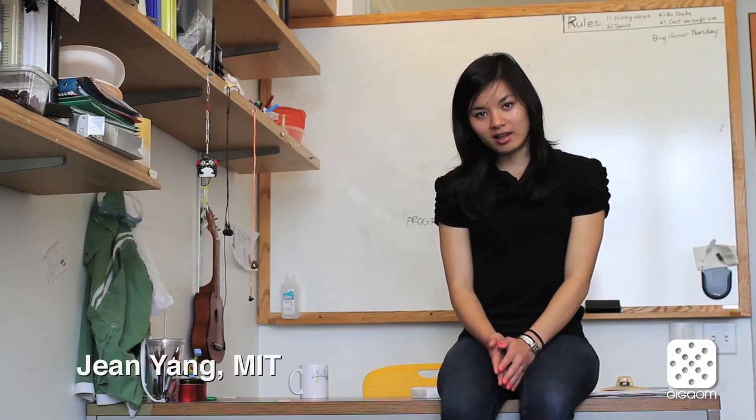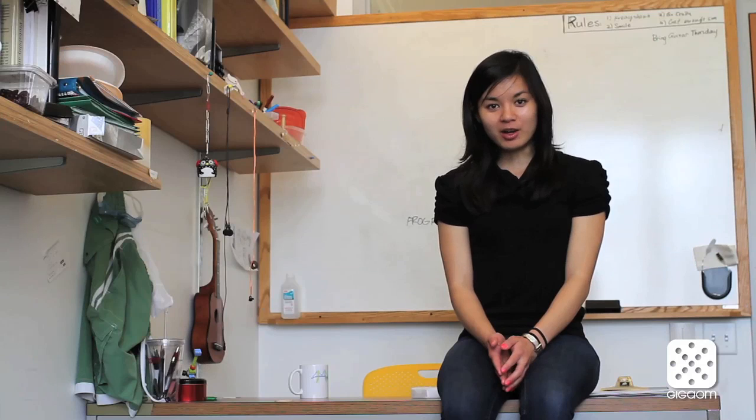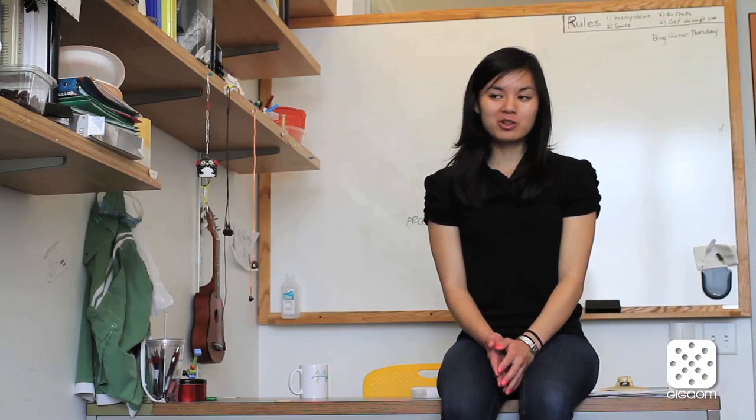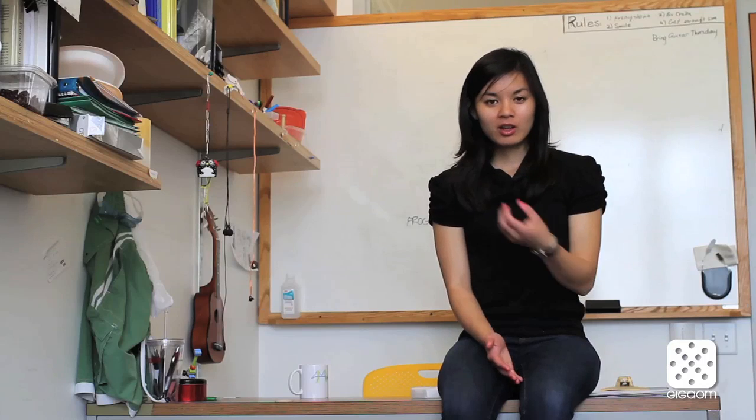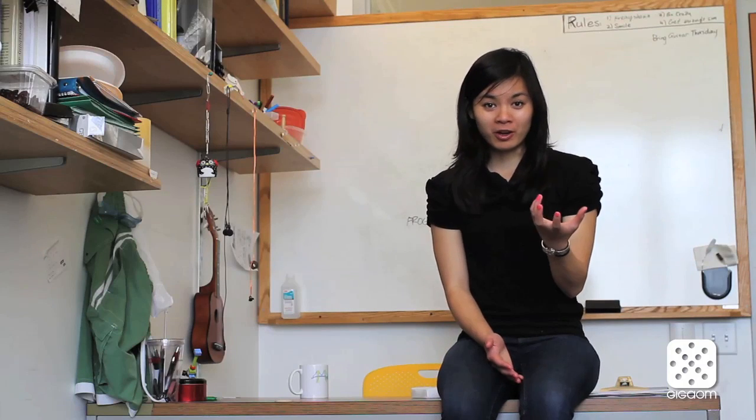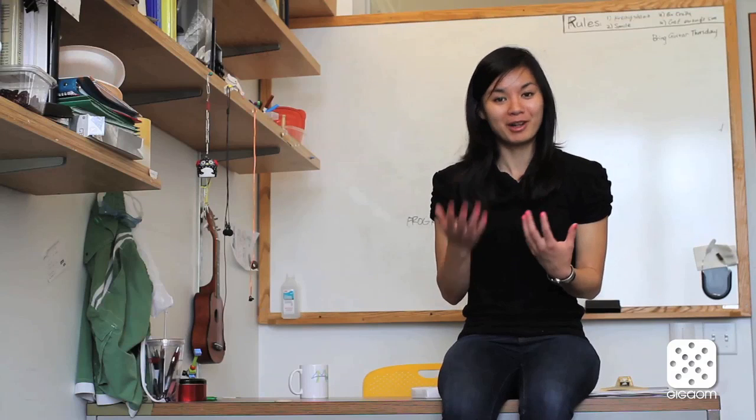My name is Jean Young and I am a fifth-year PhD student at MIT. I work on programming languages, which means that I think about the way people are programming today, the way they should be thinking about their programs, and I design programming models that help people think about programming better.